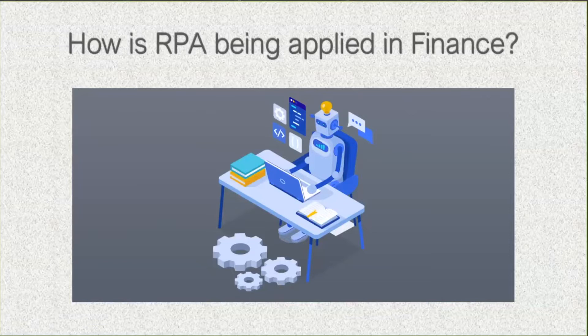Insurance companies are seeing benefit in filing claims. Investment firms are looking to RPA to fill out paperwork required for compliance, as well as document scanning for analysis purposes or extrapolating client data to better assist customers in their advisory practice. Accounting firms are looking to integrate RPA into their audit processes — there are some challenges, but it's definitely a goal of a lot of these Big Four accounting firms.